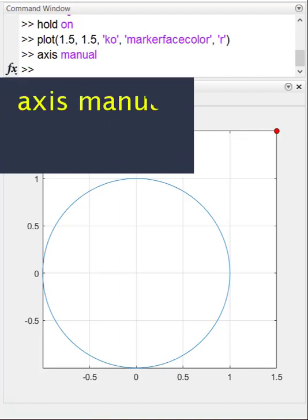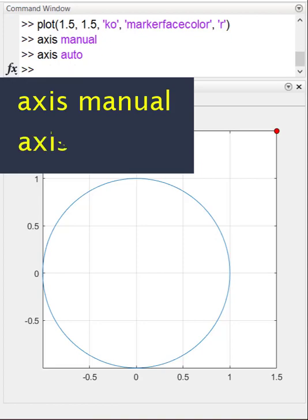If you want to prevent it, use axis manual. Now the limits are fixed and only you can change them. If you later change your mind, run axis auto. Now MATLAB sets the axis limits.